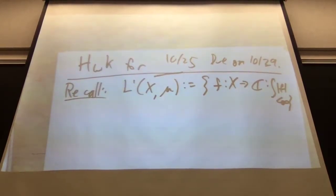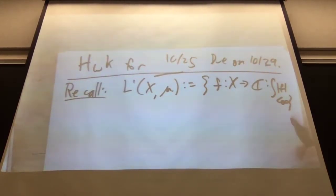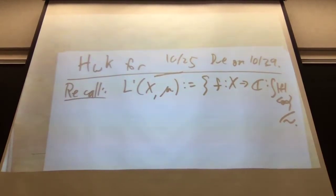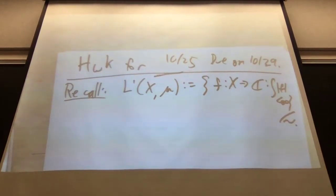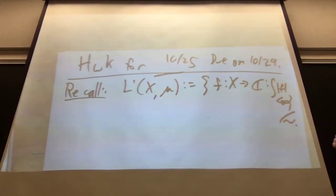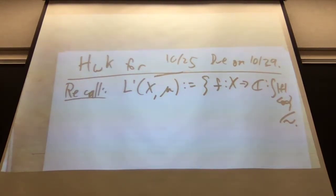That would be a space of functions, but actually it's not a space of functions — it's a space of equivalence classes of functions, where two functions are the same if their distance in this norm is zero, which is equivalent to being equal almost everywhere. That's what this equivalence is.